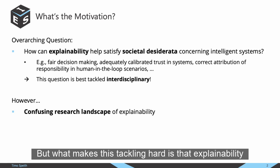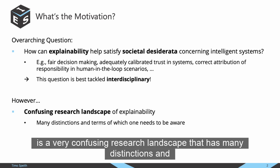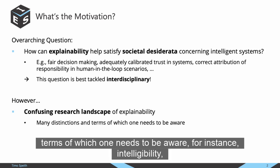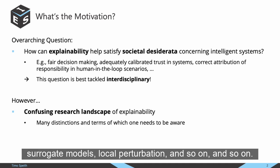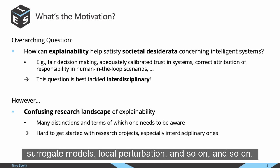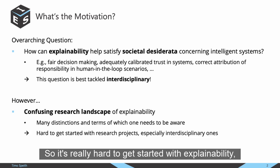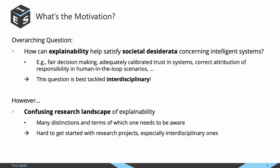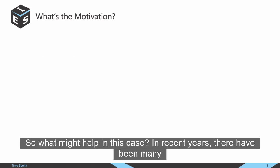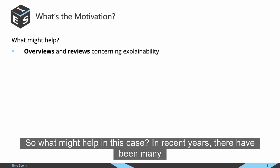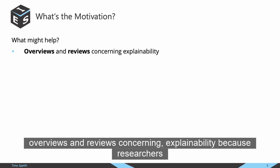What makes this tackling hard is that explainability is a very confusing research landscape with many distinctions and terms one needs to be aware of — for instance, intelligibility, post-hoc, ante-hoc, feature importance, surrogate models, local perturbation, and so on. It's really hard to get started with explainability, especially as an interdisciplinary research project.